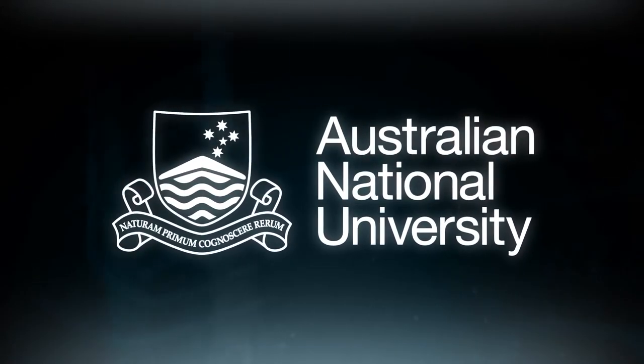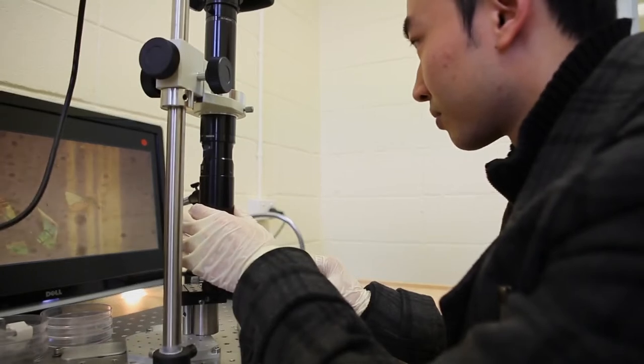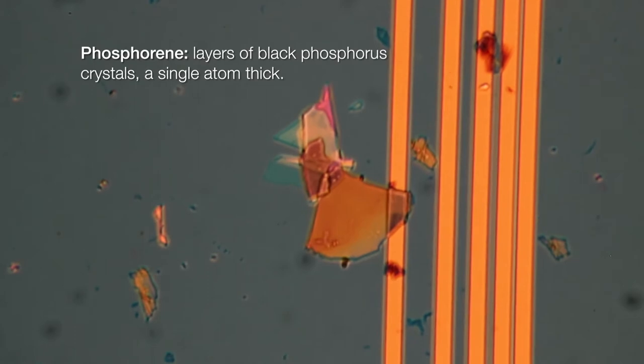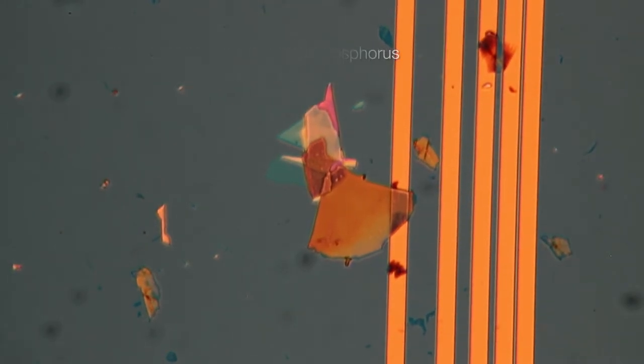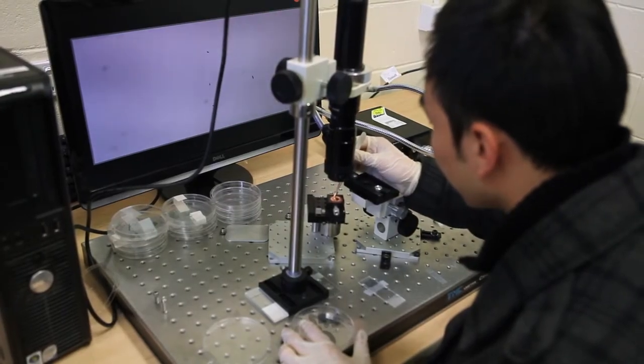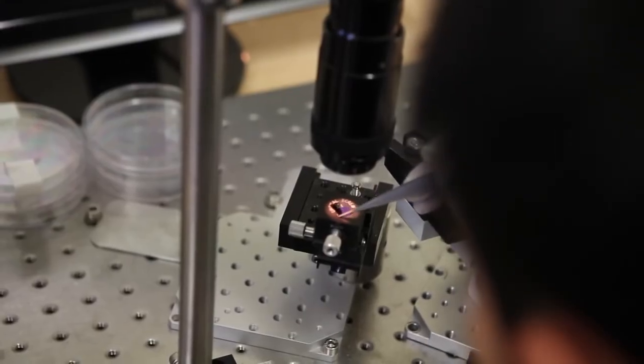We are working on a new semiconductor called Black Phosphorus or Phosphorene. Ultra thin, ultra light, and with wavelength tunability, which can offer us to fabricate lots of interesting devices such as LED and solar cells.